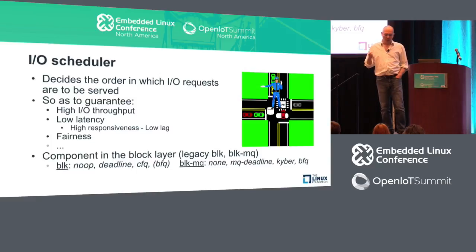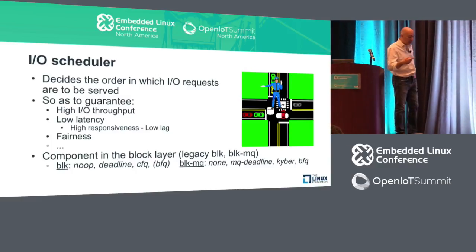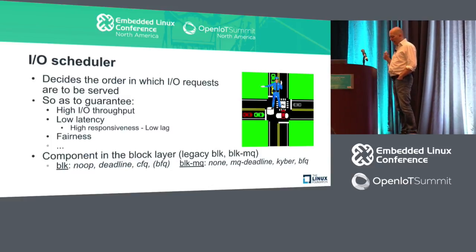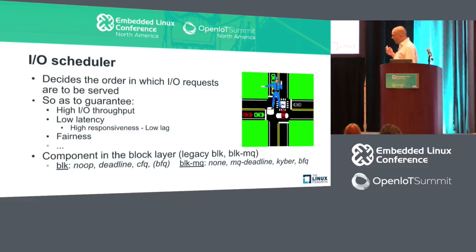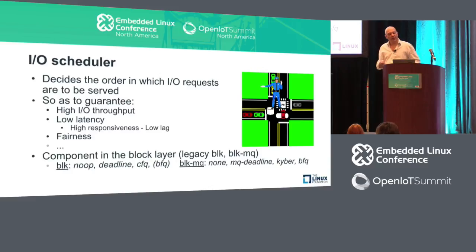This reordering, this control over the order of I/O requests, is rather important because it's the only way to achieve several important goals. One is reaching high throughput, since the throughput of storage devices is very sensitive to the order of I/O requests. Another is guaranteeing low latency to tasks that need I/O, like reading frames to play back a video, starting an application, reading or saving a file. Guaranteeing low latency to interactive tasks means guaranteeing high responsiveness — or low lag — to the overall system.